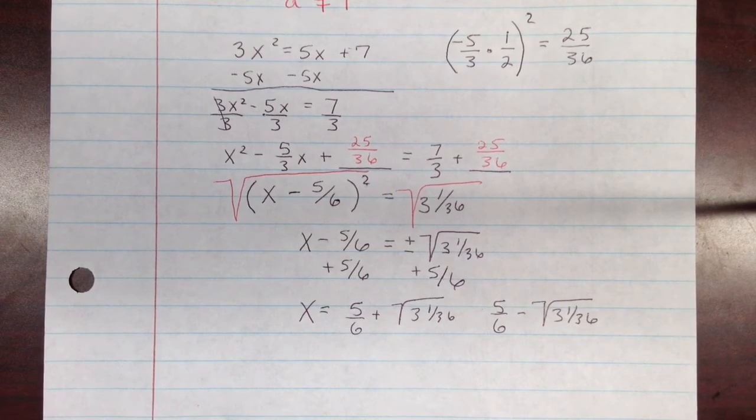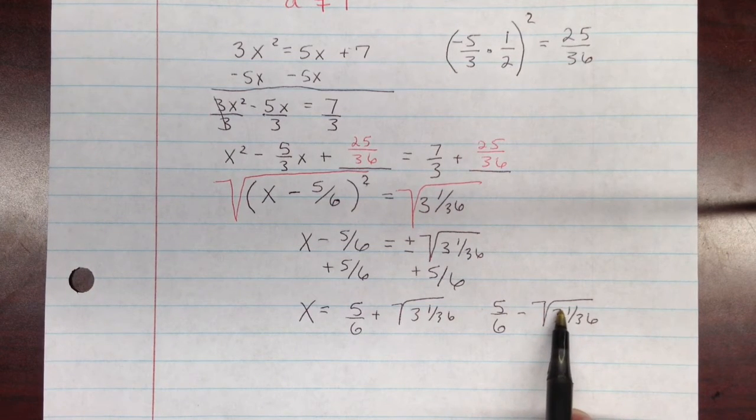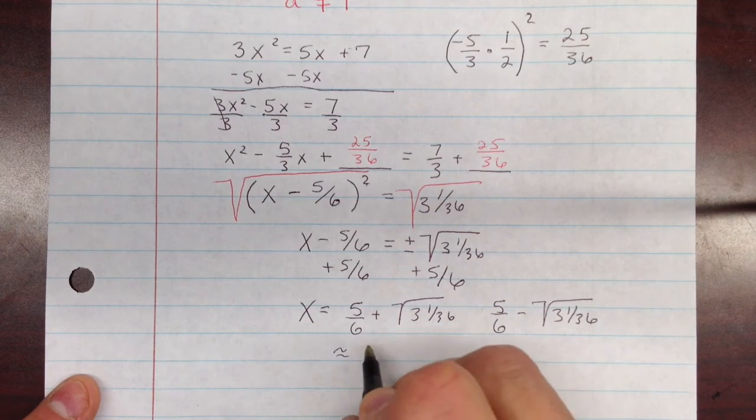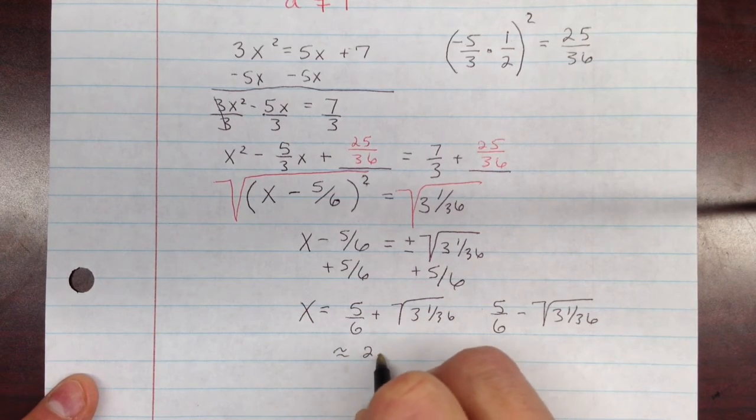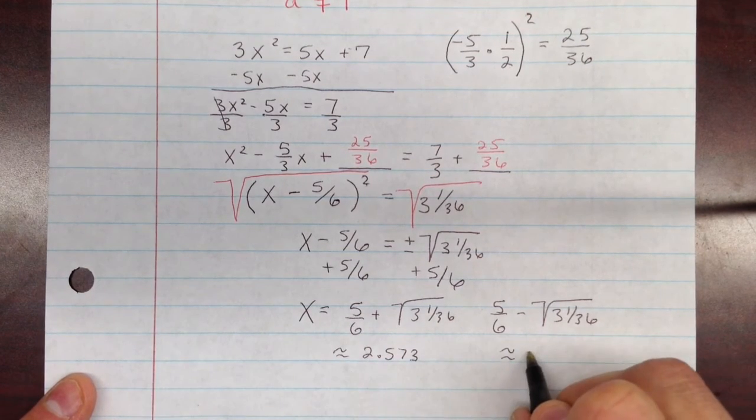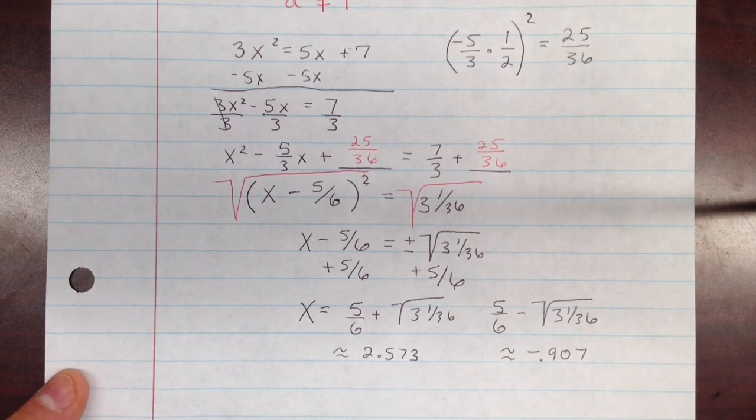So go ahead and put those into a calculator. And since this is irrational, you're going to get a decimal. It does not terminate. So this one is approximately, when you put it in, it comes out to be approximately 2.573. And this one is approximately negative 0.907. Again, those are both rounded to the nearest thousandths place.